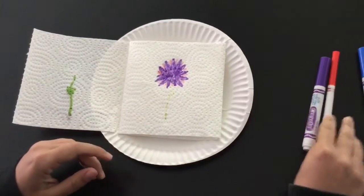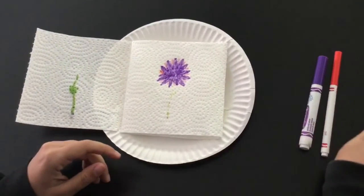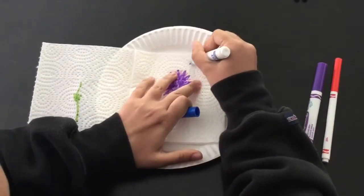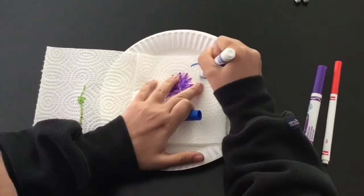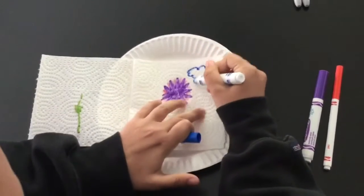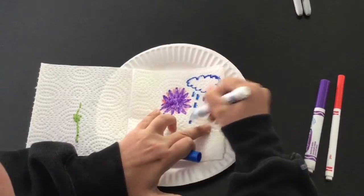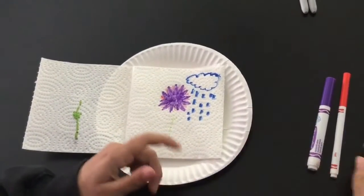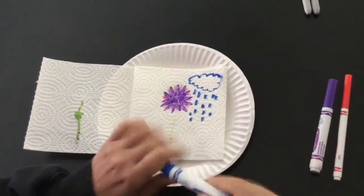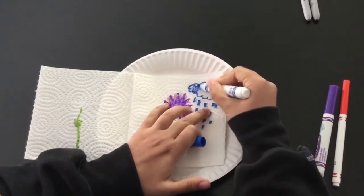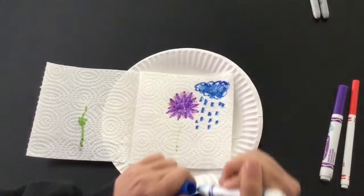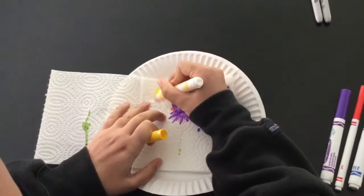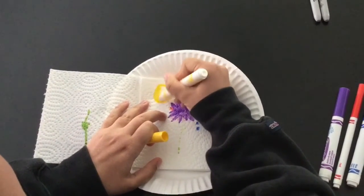And I'm also going to add, using the washable marker still, I'm going to add the two things that plants need to grow. So I'm putting a cloud and raindrops and I'm actually going to color in this cloud so you can see it better. And I'm also drawing the sun.